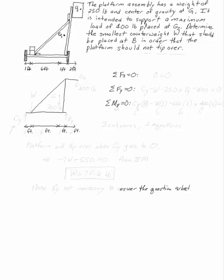The platform assembly weighs 250 pounds with a center of gravity at G1. I want to know how much weight I have to put over here at B so that I can put 400 pounds of weight at G2 in the basket.